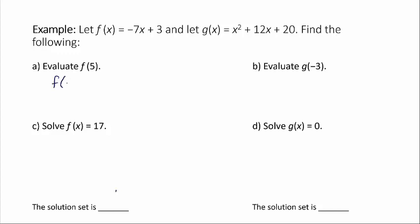So to evaluate f(5), 5 is our input into the function. So that means that we're going to replace all of the x's in the function with 5. So given that we're working with the function f, and f(x) is -7x + 3, we're going to substitute 5 in there for x.